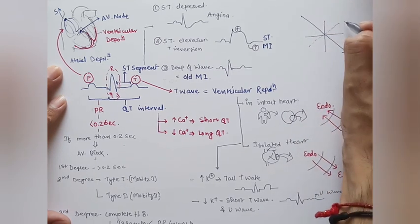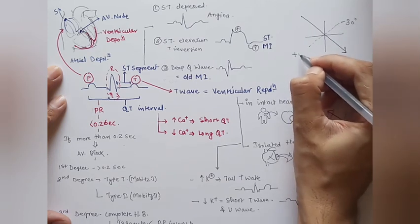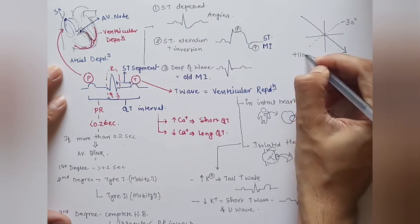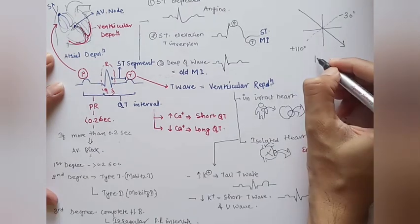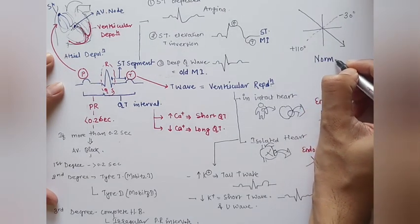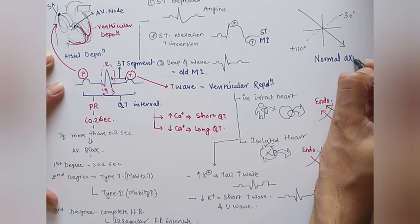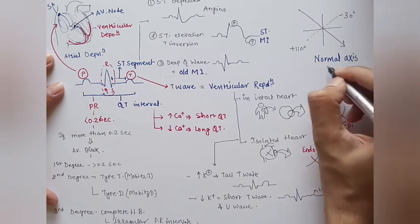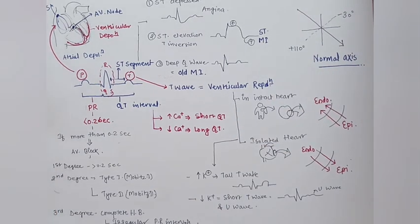Lastly, the electrical axis of the heart — the normal axis ranges from minus 30 to plus 110 degrees.